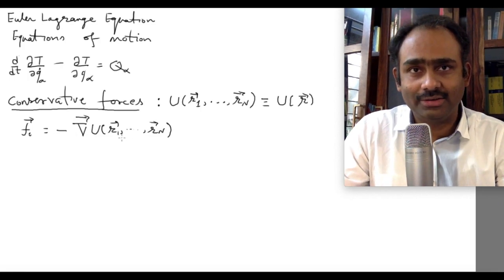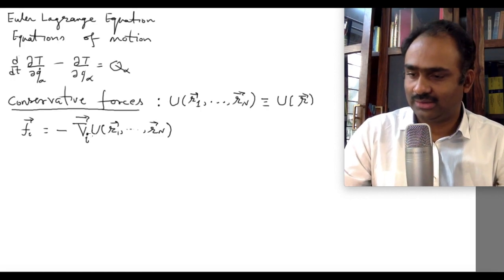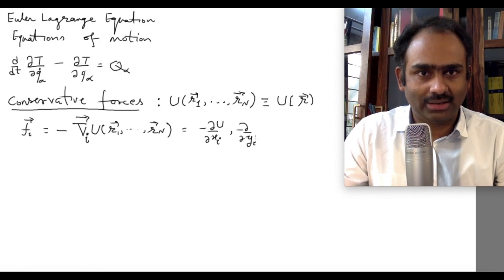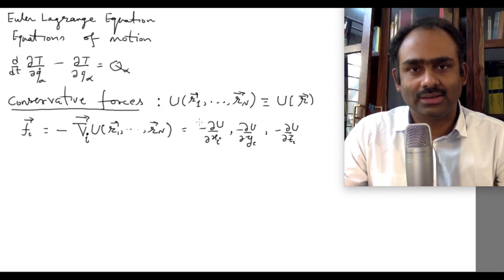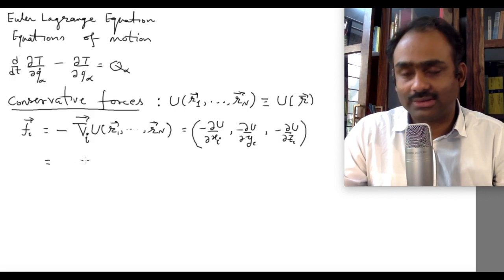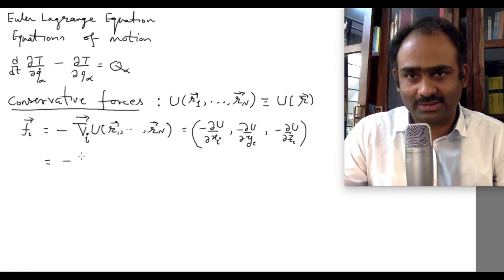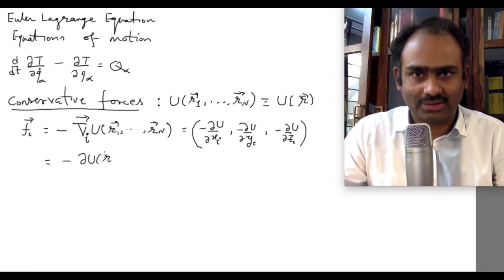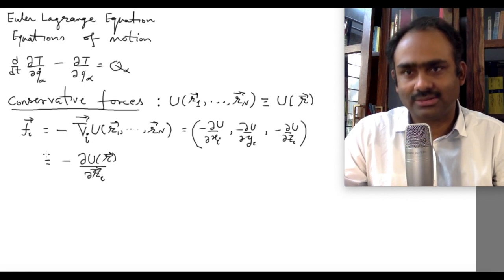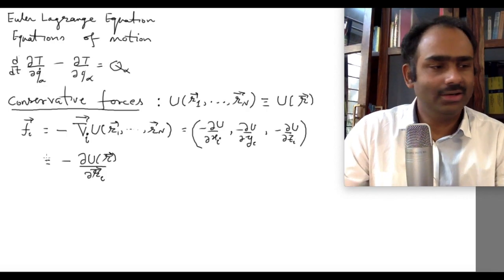Explicitly, the force on the i-th particle is: minus ∂U/∂x_i, minus ∂U/∂y_i, minus ∂U/∂z_i — that is the meaning of this gradient. We can also write this in a compact notation as minus δU/δr_i, where I write r instead of all the individual r's. That is just a notation. So those are what your forces would be if your system is conservative.